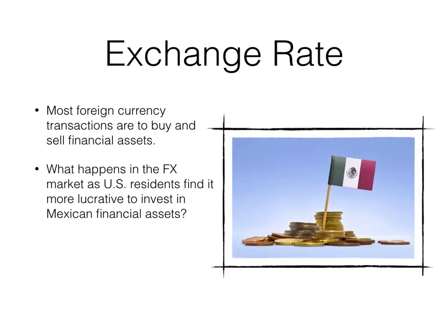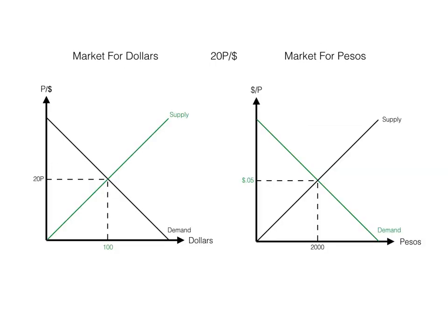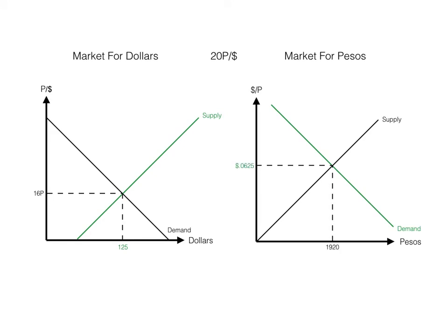Most foreign currency transactions are in financial assets, not in goods and services. So what happens when U.S. residents find it more lucrative to invest in Mexican financial assets? We can say the real interest rate in Mexico increased, and therefore, holding risk constant, more people want to invest in Mexican financial assets. To buy these assets, they first need pesos. This means the supply of dollars increases and the demand for pesos increases. The supply of dollars increases — before I'd been getting 20 pesos per dollar, now I'm getting 16. And this means the demand for pesos has increased, and now it's 6.25 cents per peso. There are $125 being transacted in this market at 16 pesos per dollar.